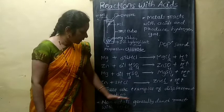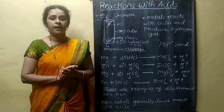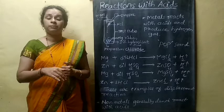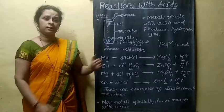These are examples of displacement reactions. Non-metals generally do not react with acids easily. But some metals also will not react with dilute hydrochloric acid — sometimes they react only with concentrated acids, or only when warmed. There are different types of reactions.